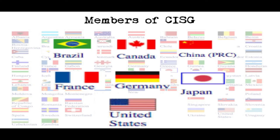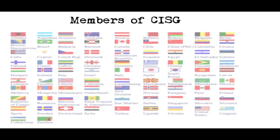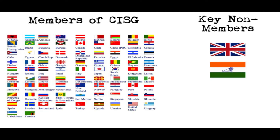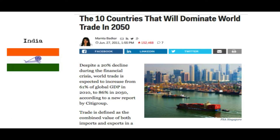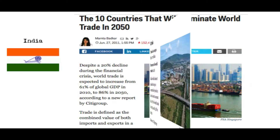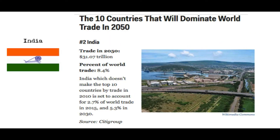Still, there are some significant players in the international trade market that have yet to adopt the CISG, including the UK, the world's 5th largest exporter, and India, currently the 19th largest exporter but projected to be the 2nd largest trading nation by 2050, with a projected 8.4% of all trade by that time.